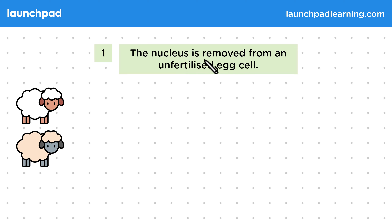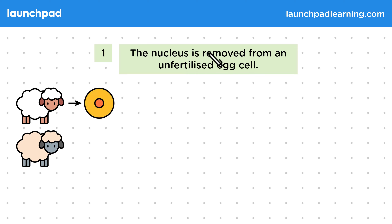First, the nucleus is removed from an unfertilized egg cell. This cell here is an unfertilized egg cell still containing its nucleus, and in this first process the nucleus is going to be removed.